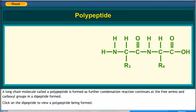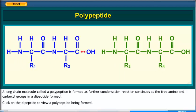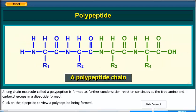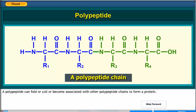A long chain molecule called a polypeptide is formed as further condensation reaction continues at the free amino and carboxyl groups in a dipeptide. A polypeptide can fold or coil or become associated with other polypeptide chains to form a protein.